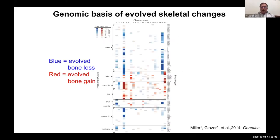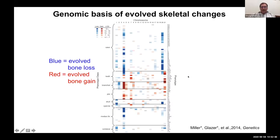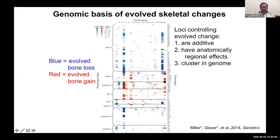This approach works very well for skeletal patterning. Shown here is a summary of over a decade's worth of QTL mapping done in the Kingsley lab at Stanford, analyzed by Andrew Glazer, one of my first grad students. Each row is a different skeletal trait, each column is a chromosome, and colored boxes indicate significant associations between genotype and phenotype — blue for evolved bone loss, red for evolved bone gain, with intensity reflecting signal strength. We've identified over 100 genomic regions controlling different skeletal traits.